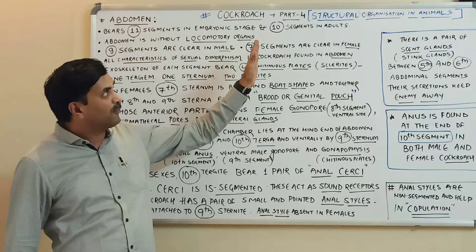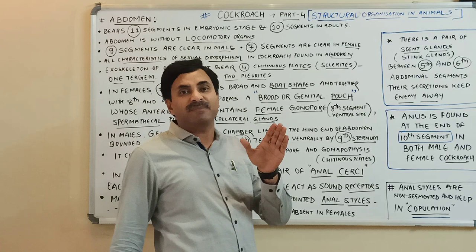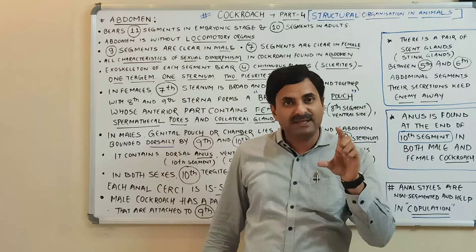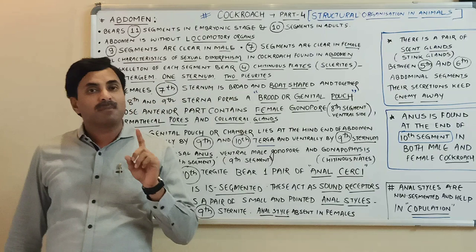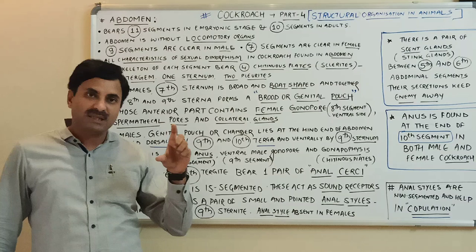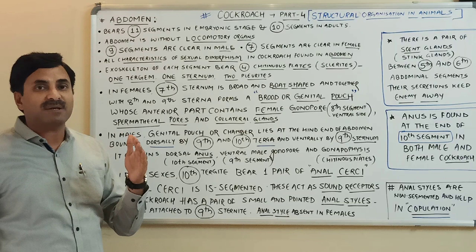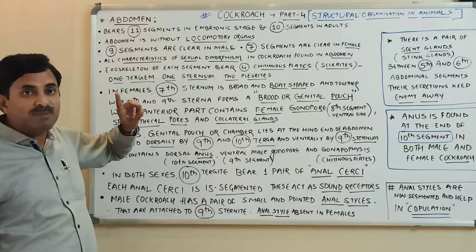Hello everyone. Today we are going to discuss Part 4 of the cockroach chapter on structural organization in animals according to NCERT. In the previous videos we studied the 20 segments found in the cockroach: 6 in the head, 3 in the thorax, and 11 segments in the abdomen region. Today we are going to discuss those 11 segments found in the abdomen region.